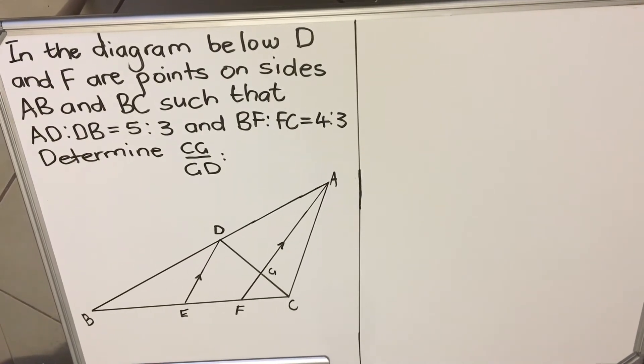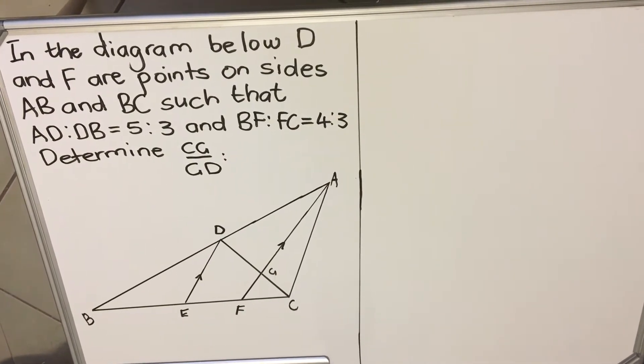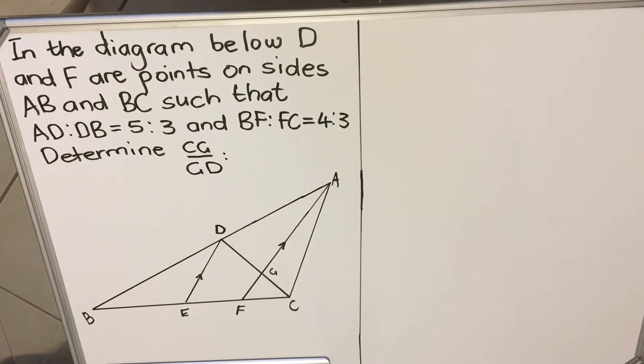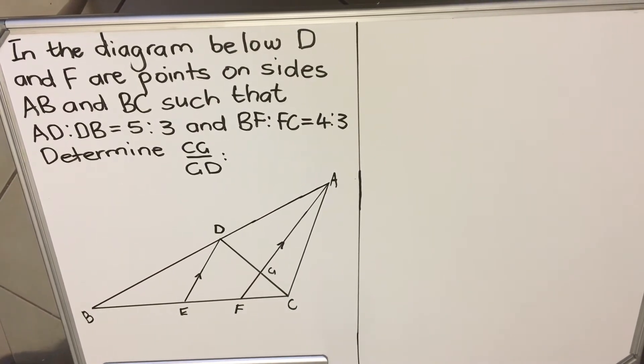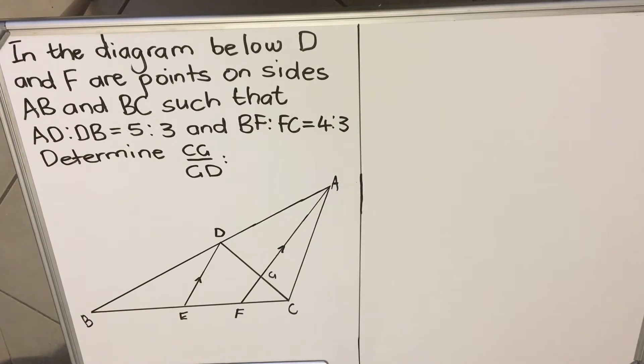Hello Creatures! This is a lesson on Euclidean Geometry Grade 12. It's the application of the theorem: line parallel to one side of a triangle.